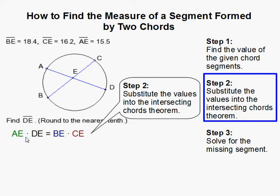Which is here. It's AE times DE is equal to BE times CE.